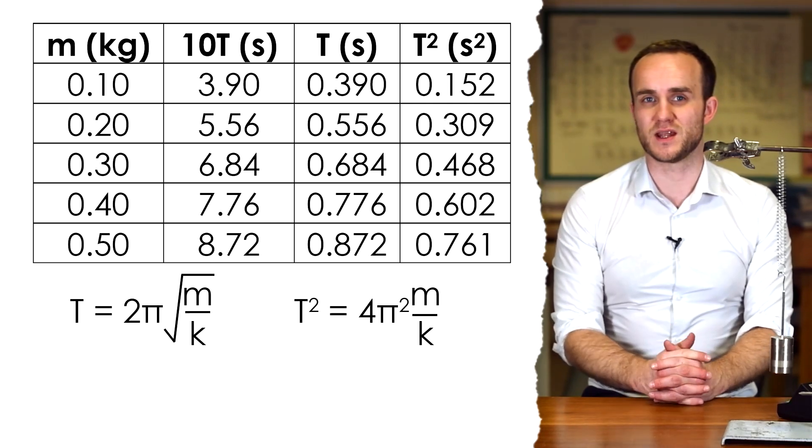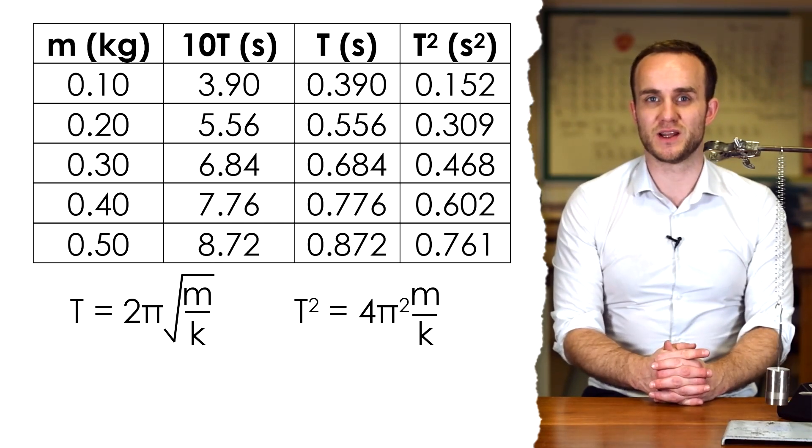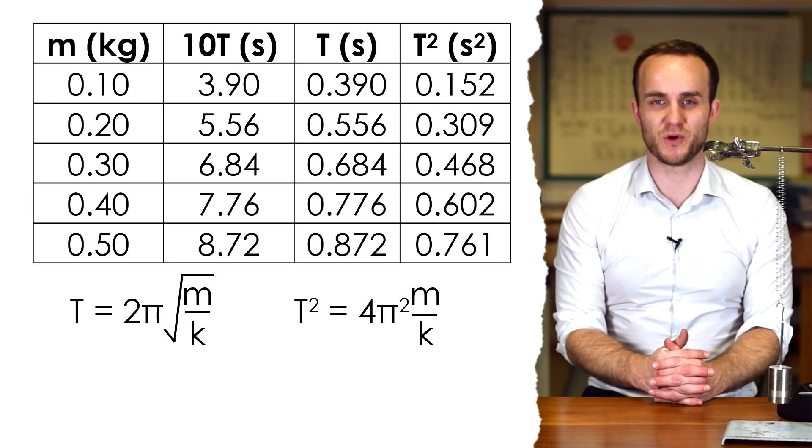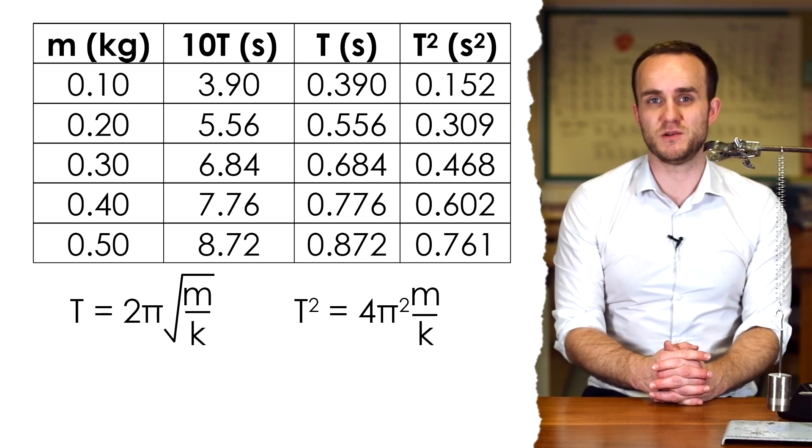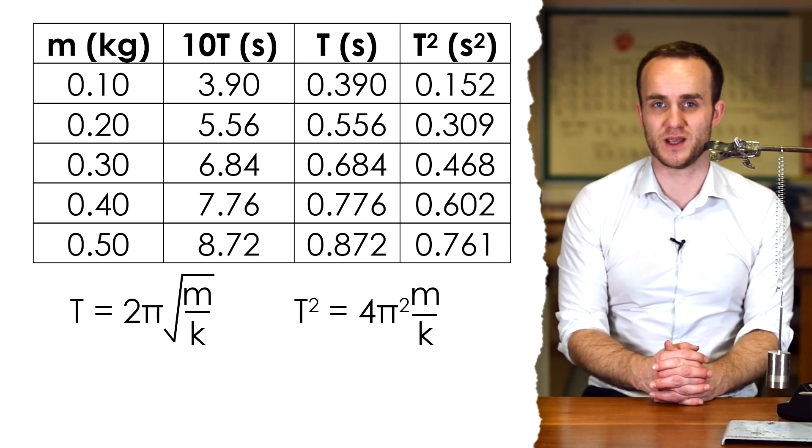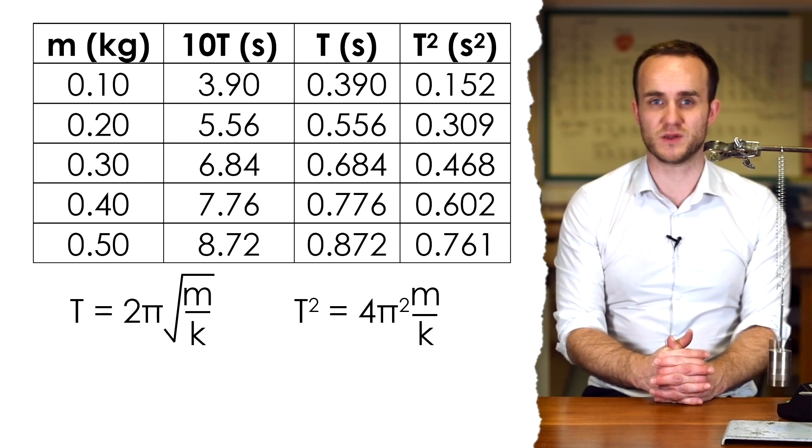I'm going to plot not t against m, because similarly to the pendulum it's not t proportional to m. The equation is t = 2π√(m/k) where m is the mass and k is the spring constant.